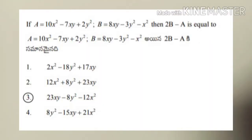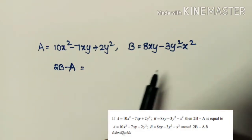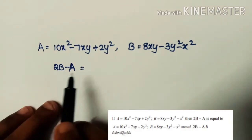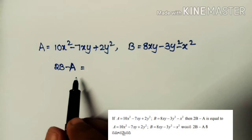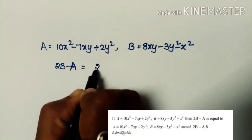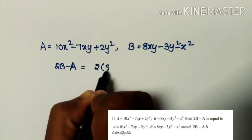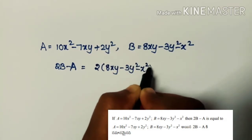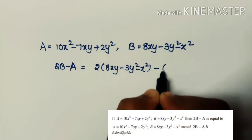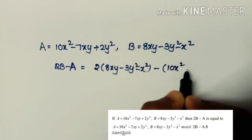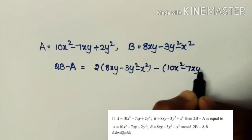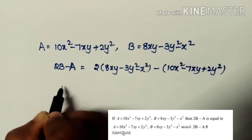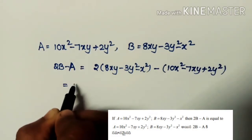Next problem: A = 10x² − 7xy + 2y² and B = 8xy − 3y² − x². Find 2B − A. So 2B − A = 2(8xy − 3y² − x²) − (10x² − 7xy + 2y²). First multiply B by 2: 16xy − 6y² − 2x².